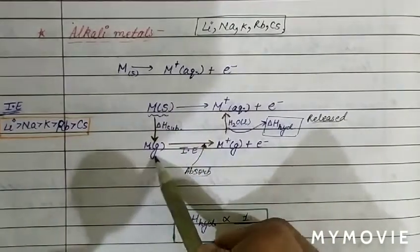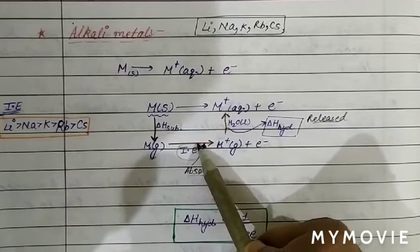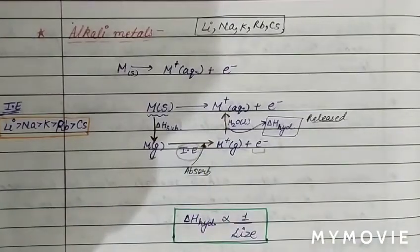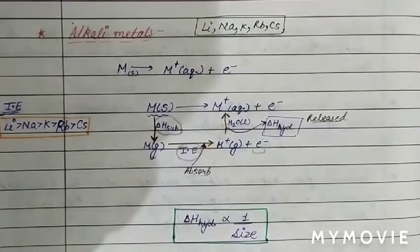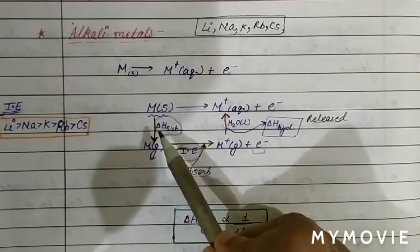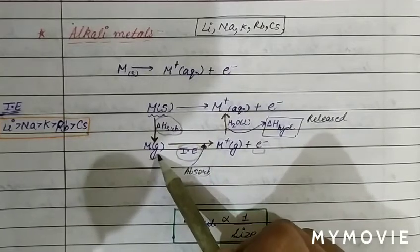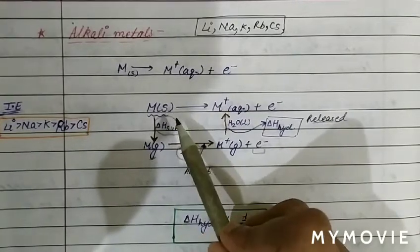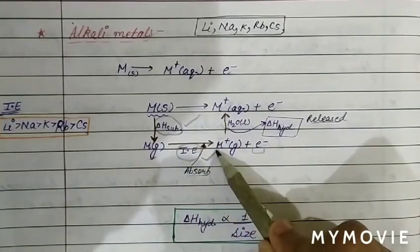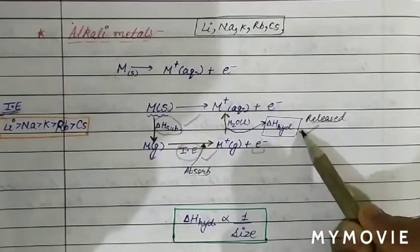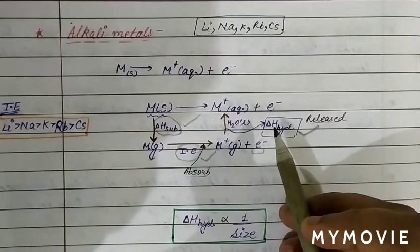Sublimation energy is required to convert the physical state from solid to gas. The next energy required is ionization energy, which is needed to remove an electron. Sublimation energy is an endothermic process because energy is given to the solid to convert it into gaseous form. The third is hydration energy, which is the energy released in the process.